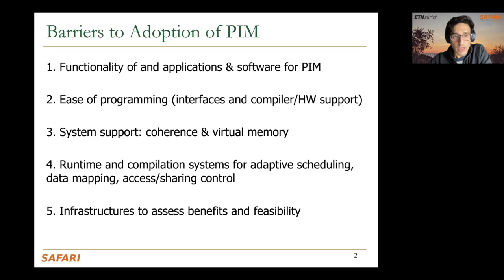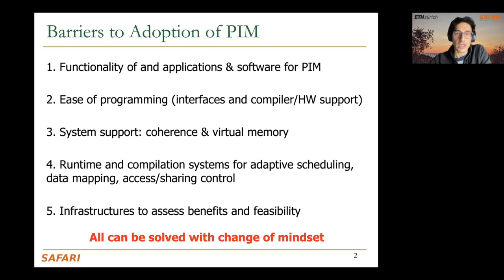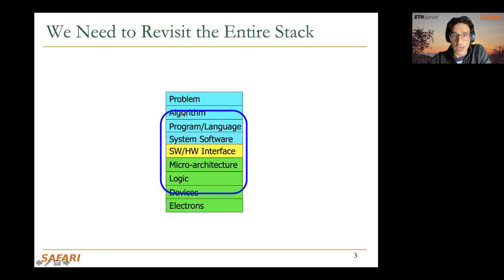Another barrier involves runtime and compilation systems for adaptive scheduling, data mapping, sharing, and access control — we'll talk about some of these today. Finally, we need infrastructures to assess the benefits and feasibility of processing in memory. A few years ago there were no PIM simulators; now we are starting to produce PIM simulators and benchmark suites for real and simulated architectures. All these barriers can be solved with a change of mindset, going from the program and algorithm level all the way down to logic and devices.